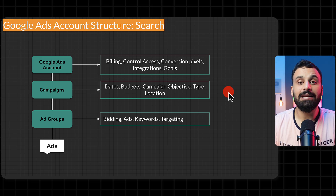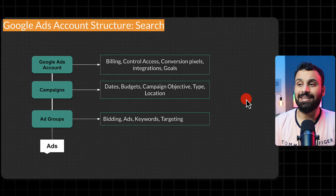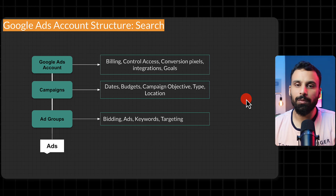At campaign level you also control the campaign type, because in Google Ads one campaign can have only one format. If you create a campaign, it can be either search, display, or video — you cannot have search ads and video ads in the same campaign. There are automated campaign types like Performance Max which we'll discuss later, but for each standard campaign type you can only choose one. You also choose location targeting at campaign level.